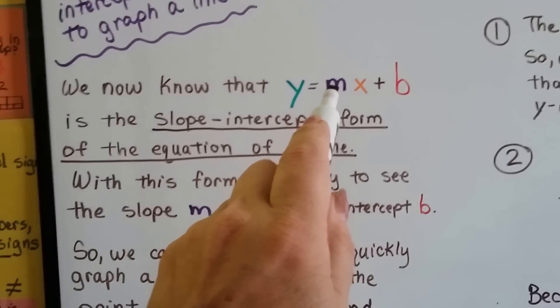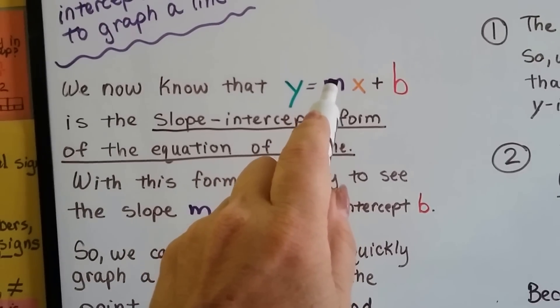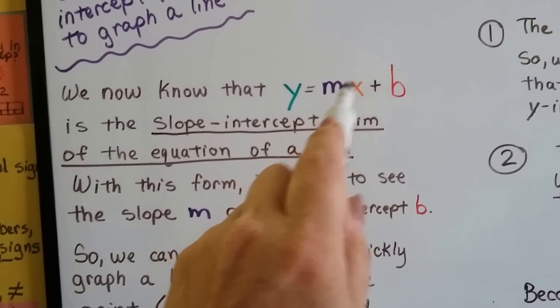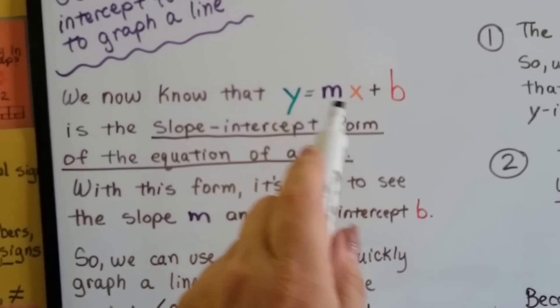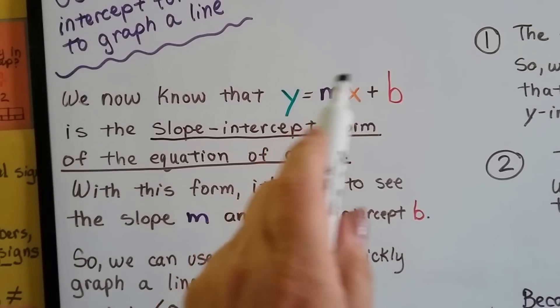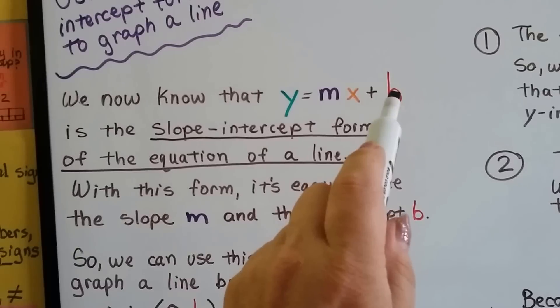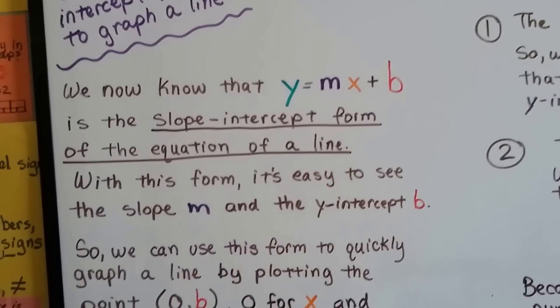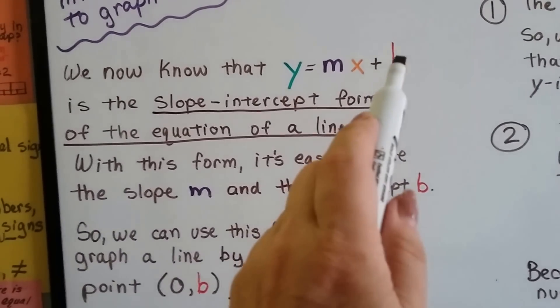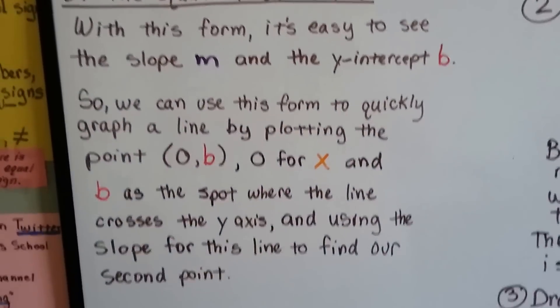So remember, this m is the slope, because in the slope formula it says m equals. These are x and y coordinates for x2 and y2. And this, b, is the spot where the line crosses the y-axis. So by knowing 0 and whatever this b is, we can make a line. So let's do the first one.